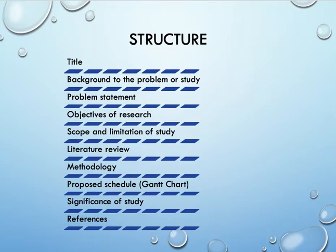Then you write the literature review — what you have been reading so far and what are the gaps from the previous researchers. Then state what methodology you're going to propose. Then the proposed schedule, also known as the Gantt chart — you need to plan properly when to complete your study. And then the significance of the study: you need to highlight what the significance of the study is to some parties, and then the references.